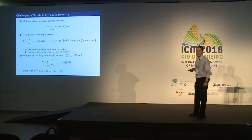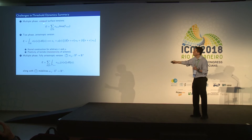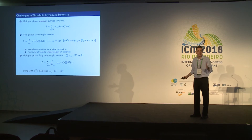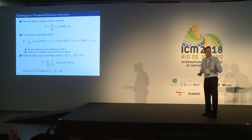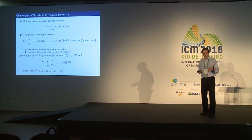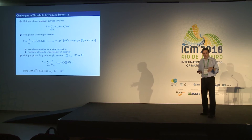The challenges in threshold dynamics: can we extend these very simple algorithms to isotropic multi-phase with unequal surface tensions (sigmas are constants, not depending on the normal — this was not previously known)? People tried to use the original way the algorithm was discovered, which does not generalize well. Instead, we reverse-engineer the algorithm and find a different derivation that does generalize to these cases.